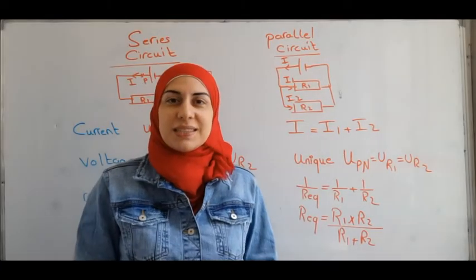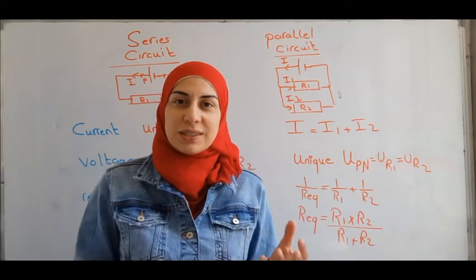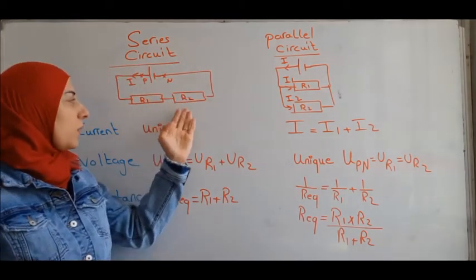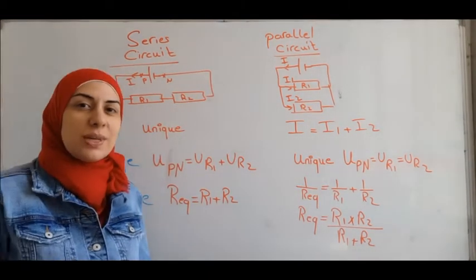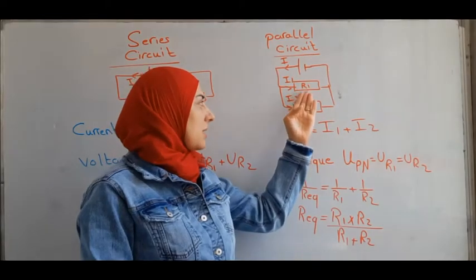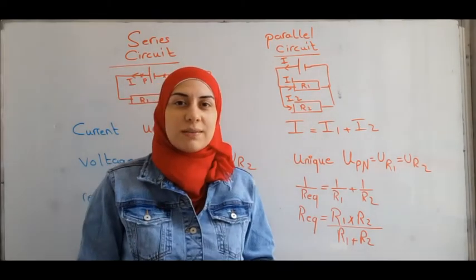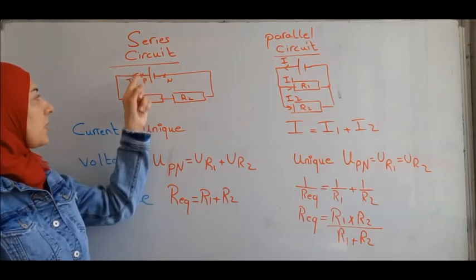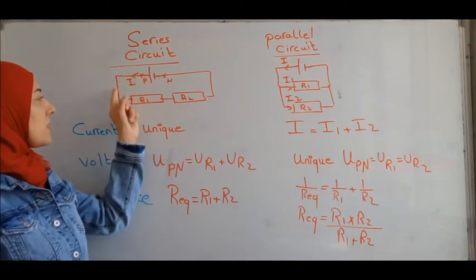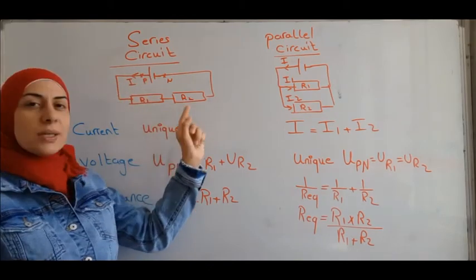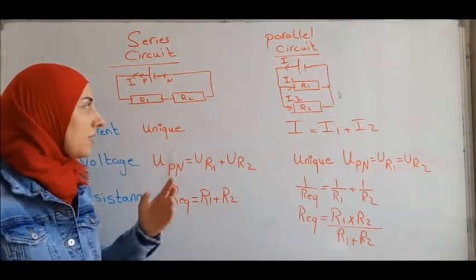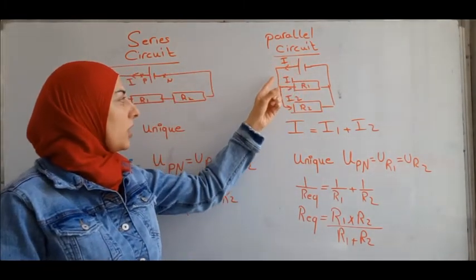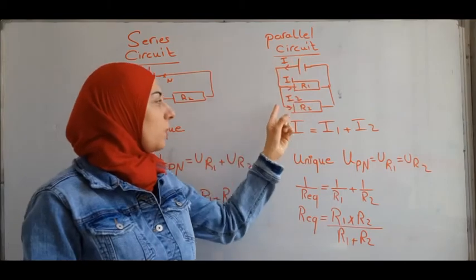Let's study some differences between series and parallel circuits. Here we have two resistors R1 and R2 connected in series, and in this case R1 and R2 are connected in parallel. In a series circuit, the current is unique — the same current passes through R1 and R2. In a parallel circuit, the current is additive: the main current I equals I1 plus I2.